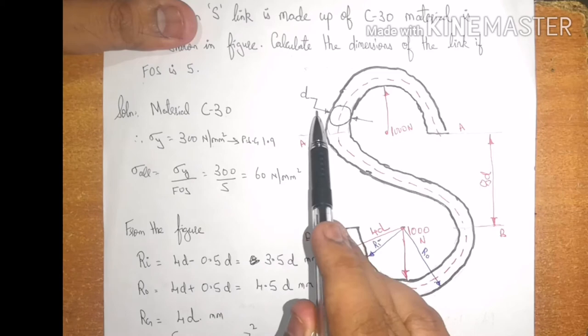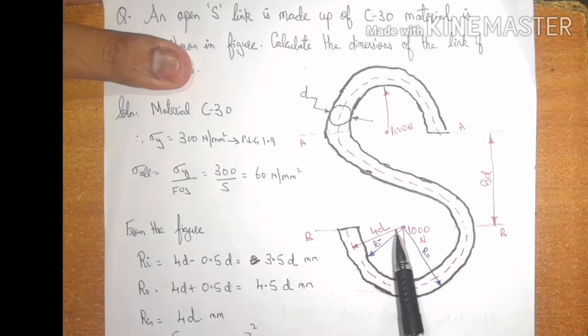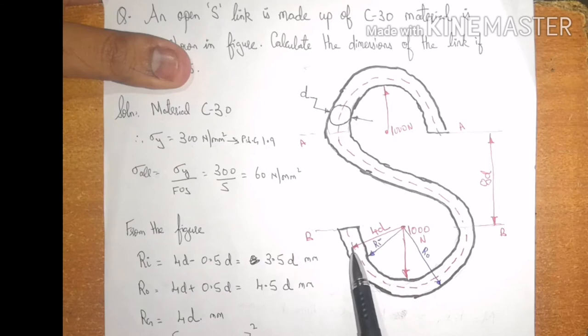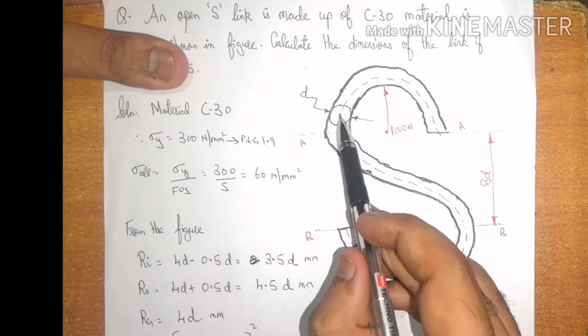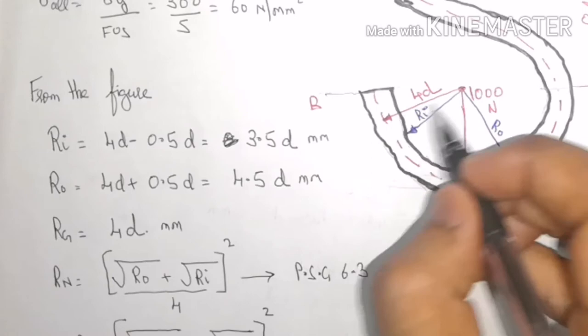Let us assume that this dimension is D. In the question, we are given that from this center to this center line, or the radius of curvature is 4D. So I can directly write down Rg is equal to 4D. Now, if Rg is equal to 4D that means from this point to this point it is 4D.